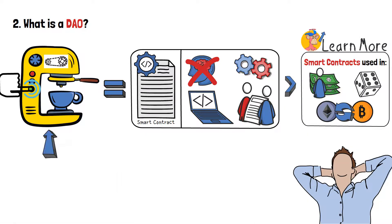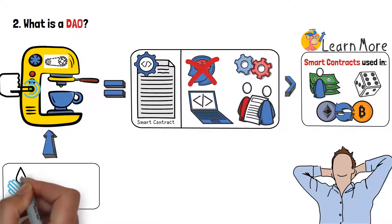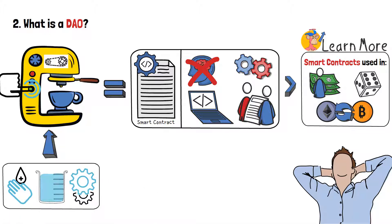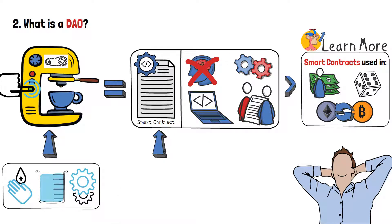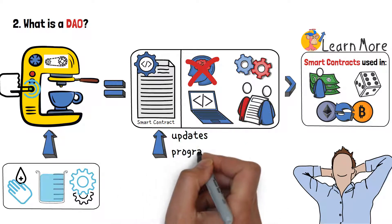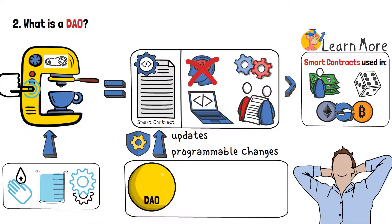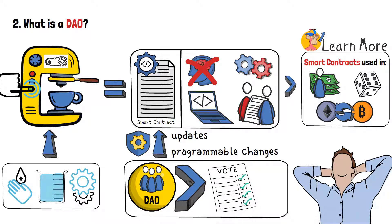Going back to the coffee machine example, even though all of its processes are automatic, every once in a while you are going to need to clean the machine and all of its filters, fill its water tank, and perform general maintenance. Well, the same can be said about smart contracts as well. In order to perform certain updates and programmable changes to the contract, and to take care of the project behind it in general, you have DAOs — groups of people who all vote on proposed changes to their respective network, and implement them if a mutual decision is made.